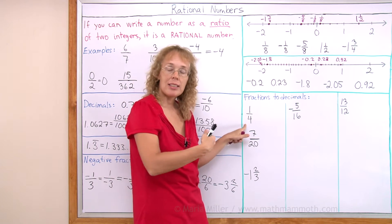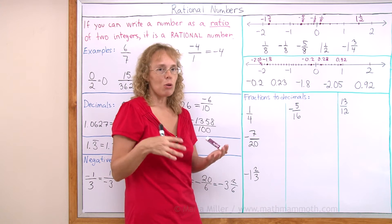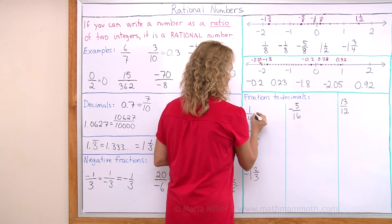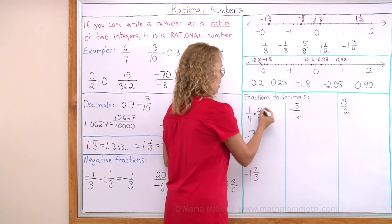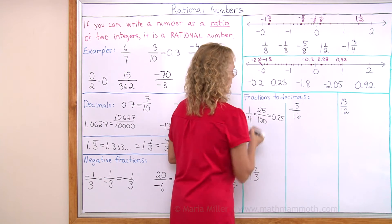For example, 1/4. How do you express that as a decimal? Maybe you remember that 1/4 is a quarter, and a quarter of a dollar is 25 cents. Or maybe you want to use equivalent fractions and write it as 25/100. Either way, we get 0.25 as a decimal.